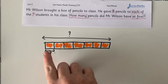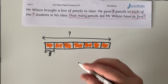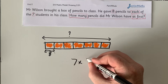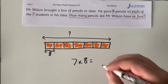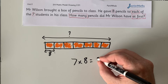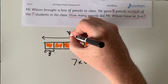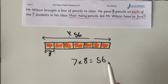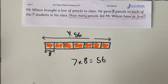I have seven students who each received eight pencils. So to find out how many pencils there were in total, seven eights are 56. So Mr. Wilson had 56 pencils. If he shared them between his seven students, each of them got eight.